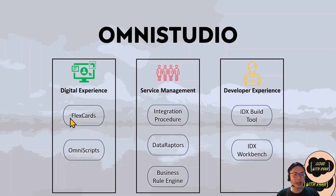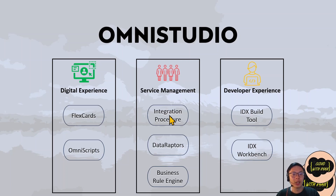FlexCards are like your user interface. OmniScripts are like FlexCards but they take inputs from the user. The service management layer contains data raptors, integration procedures, and business rule engine. Data raptors are basically a combination of SOQL queries and DML statements that allow you to insert and update records. Integration procedures allow you to chain data raptors, Apex, and APIs, along with many other functions. The business rule engine allows you to perform complex calculations.